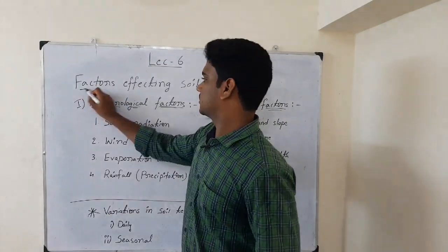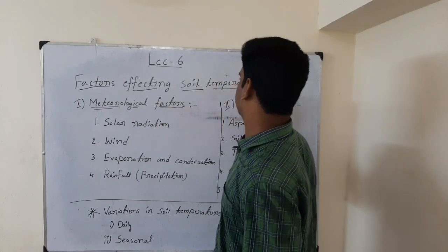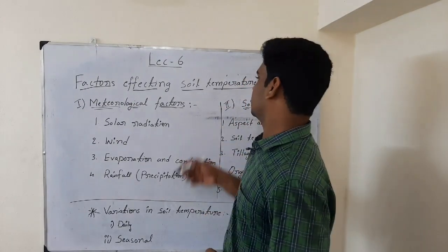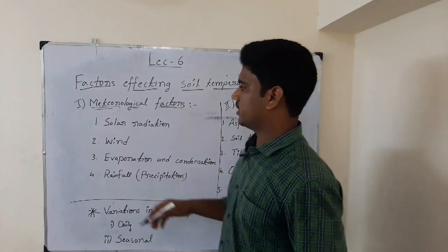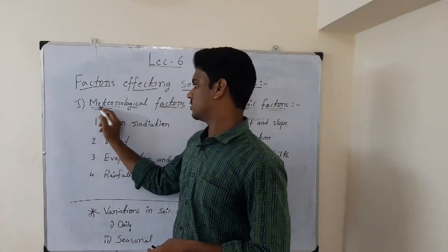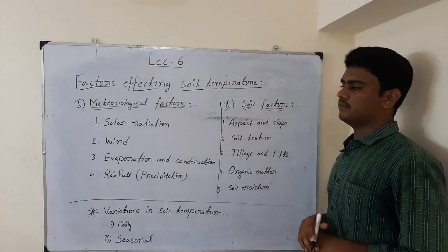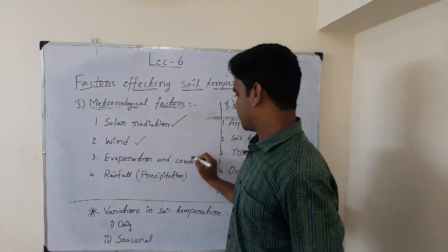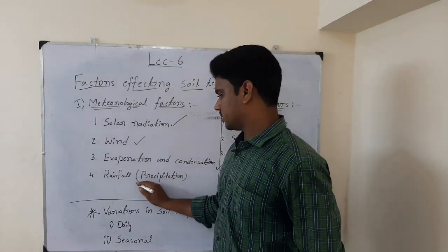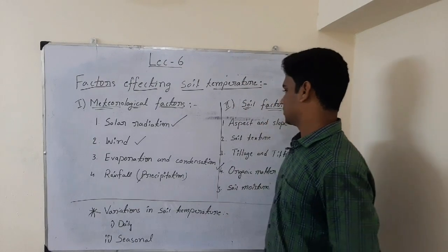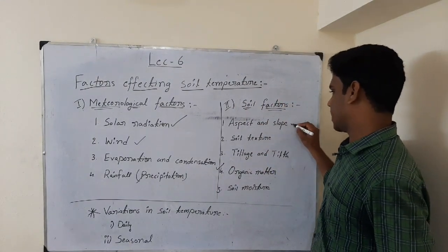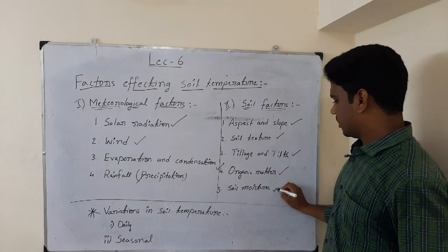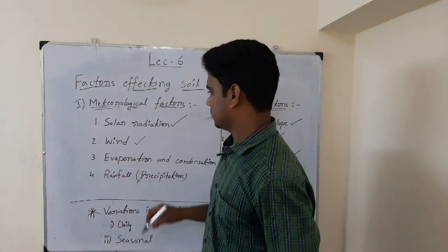In the previous class we discussed the importance of soil temperature. Now let us see the factors affecting soil temperature. There are two main categories: meteorological factors and soil factors. Meteorological factors include solar radiation, wind, evaporation and condensation, and rainfall or precipitation. Soil factors include aspect and slope, soil texture, tillage and tilt, organic matter, and soil moisture.